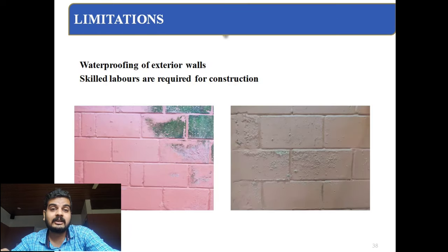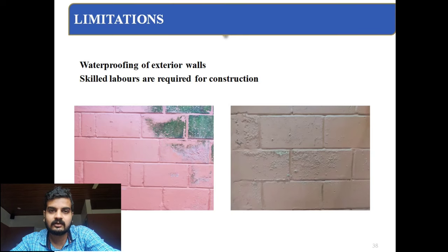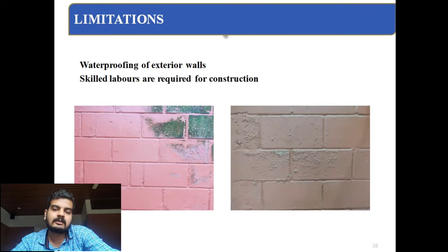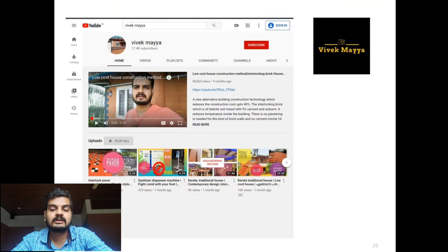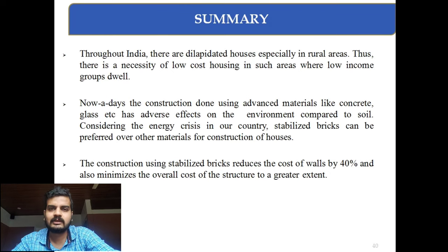There are some limitations. First, waterproofing of exterior walls is necessary — you can see dampness on some walls exposed to rain or water. Also, the putty finish may expand when it comes in contact with water, causing dampness. The solution is to apply a waterproofing coat first, then exterior paint. Second, skilled laborers are required — the usual conventional mason cannot do this kind of brickwork because very experienced laborers are needed. These are the two main limitations found.